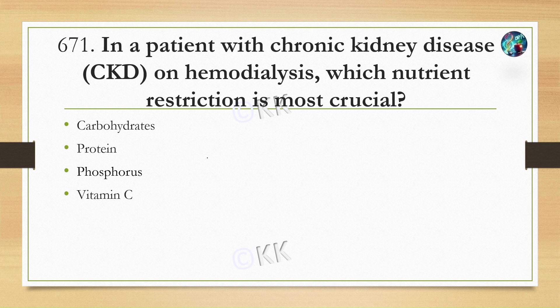In patients with chronic kidney disease on hemodialysis, which nutrient restriction is most crucial? Option A is carbohydrates. Option B, protein. Option C, phosphorus. Option D, vitamin C. The answer is option C, phosphorus.